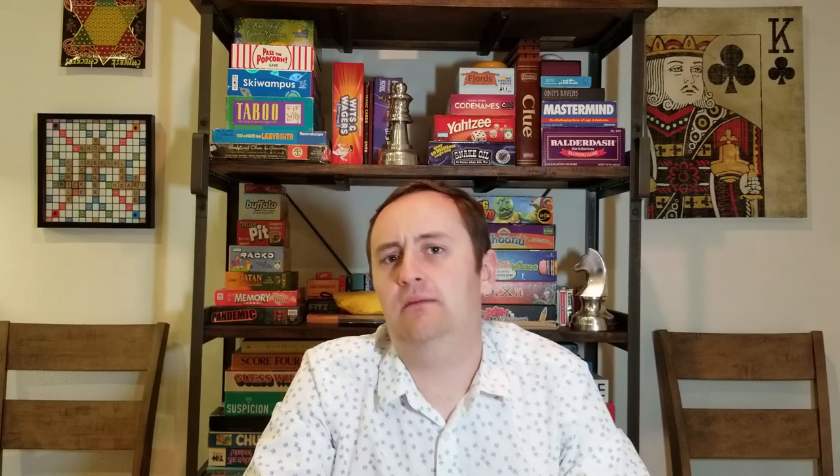Now let's take this one step further and ask: am I going to buy a second jalapeño? I already have one. I might want a second — I get something out of that — but I don't value it quite as much as the first one. Let's say I value that second jalapeño, my marginal benefit for it, at only $2.50, not $3. Am I going to buy that one? Yes — $2.50 is still higher than 20 cents.